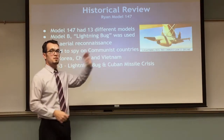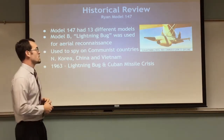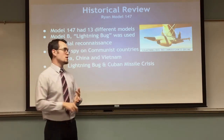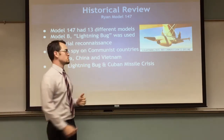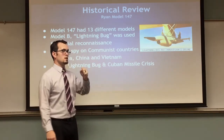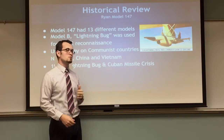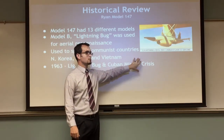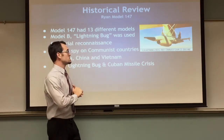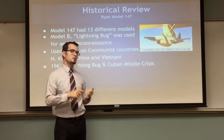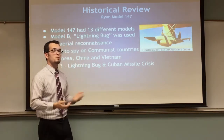This is the Ryan Model 147, which had 13 sub-models. The B model, called the Lightning Bug, was used for aerial reconnaissance — spying on communist countries like North Korea, communist China, and Vietnam. It was also going to be used during the Cuban Missile Crisis to spy on Fidel Castro. This brings us to a fork in the road between aerial imaging drones and more destructive drones. We'd like to focus on commercial applications, especially agricultural, since this model heavily utilized imagery and sensors — ultimately what we want to optimize for agriculture.